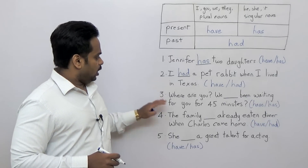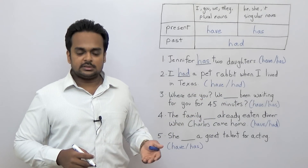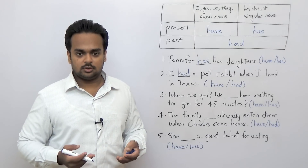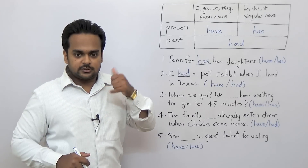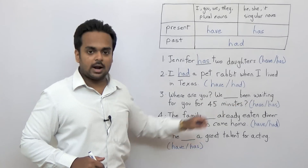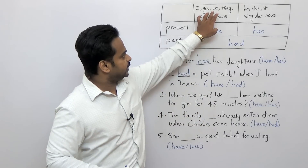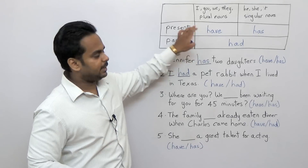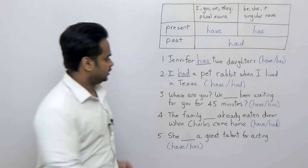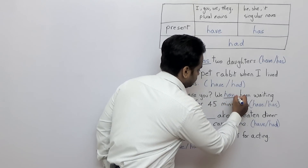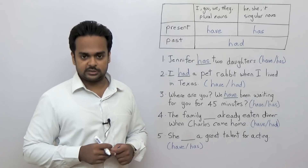Number three: 'Where are you? We ___ been waiting for you for 45 minutes.' This is something you might say to a friend on the phone. The subject of this sentence is 'we,' and if the subject is 'we,' you use 'have' because this sentence is in the present — in fact, it's in the present perfect tense. So: 'We have been waiting for you for 45 minutes.' This is still happening, so it's in the present.